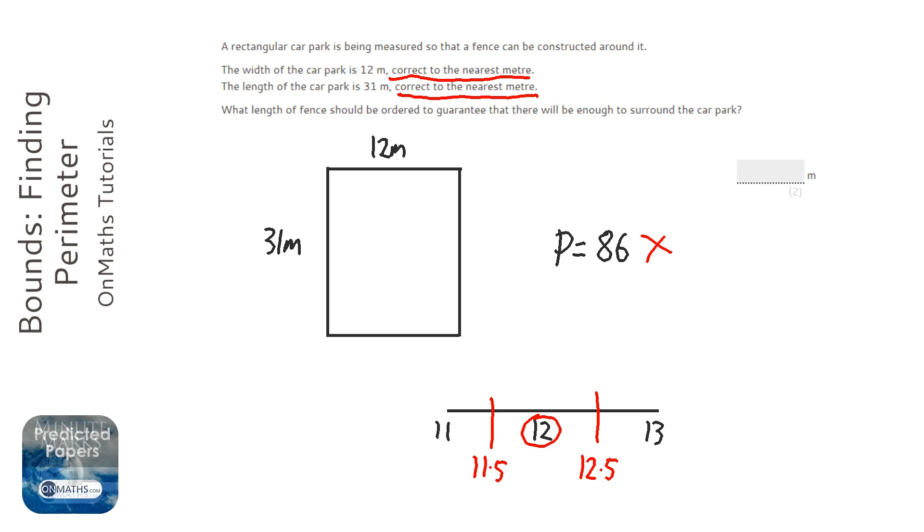So the maximum it could be is 12.5, the minimum 11.5. So worst case scenario, we've completely got this wrong, and we think actually, or in real life, it's actually 12.5 metres.